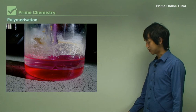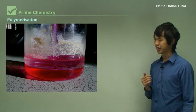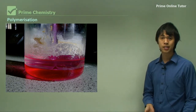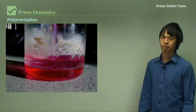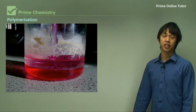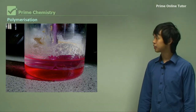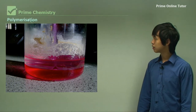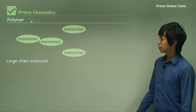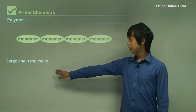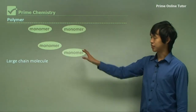This is just one industrial version of polymerization. We use polymers for practically everything nowadays. A polymer is a large chain molecule, and as you can see, it's made up of these smaller chemicals.